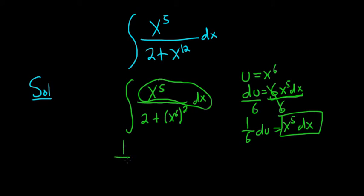So we can pull out the 1/6th. So we have integral of du over, and this is going to be an arctan. So what we want to do is we want to write the 2 as the square root of 2 squared, and here we have plus u squared.